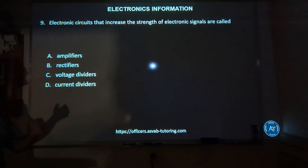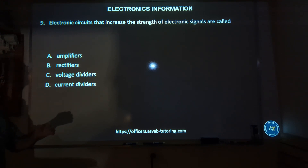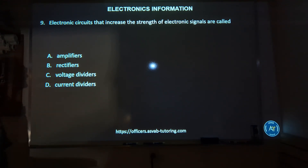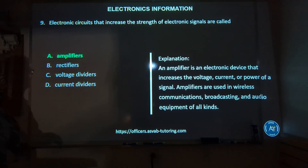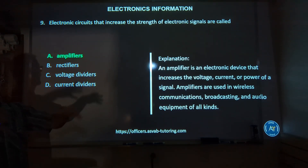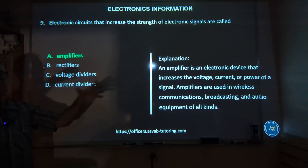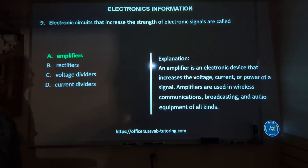Number nine: electronic circuits that increase the strength of electronic signals are called — A, amplifiers; B, rectifiers; C, voltage dividers; or D, current dividers? The correct answer is A, amplifiers. To make more is to amplify. Knowing some of the roots of words can help you with some of these problems.